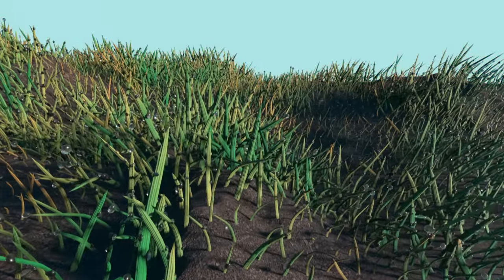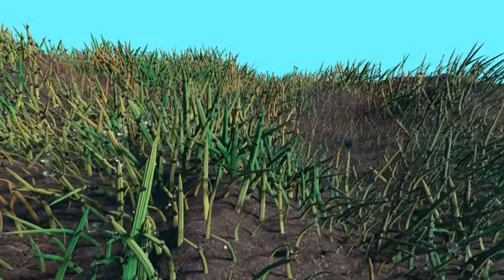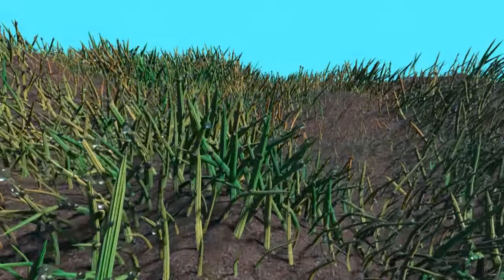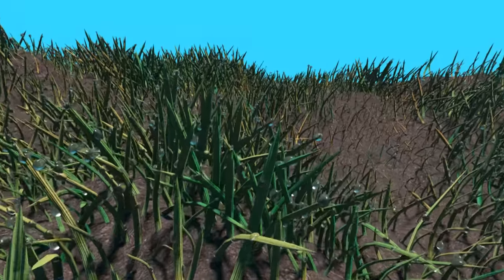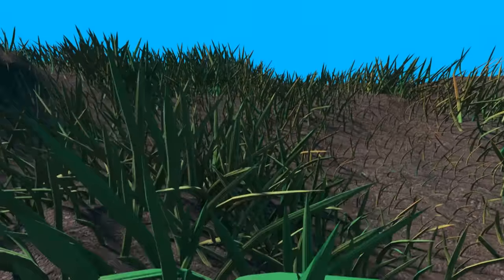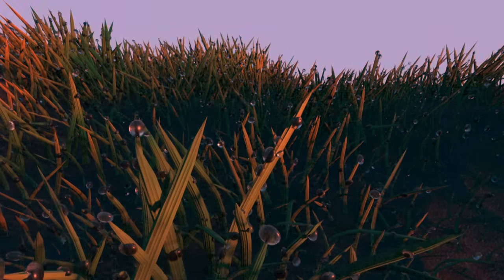Have you ever gone outside and seen a layer of dew on the ground? Where did this water come from? It came from the air. During the day, it was warm and the air held lots of water. But at night, it got cold. And the air could no longer hold this water. So it condensed on the ground. And that's what dew is.